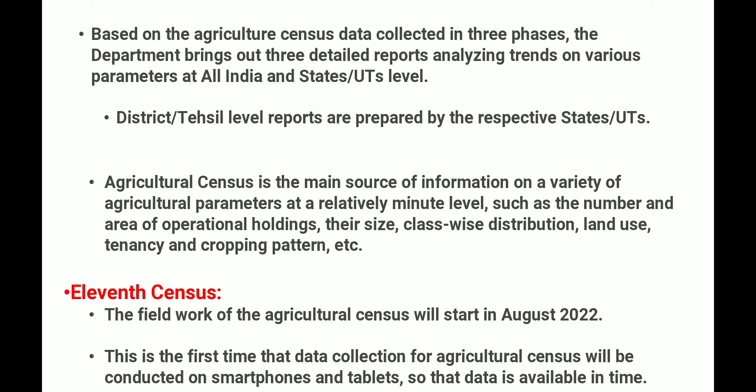यह जो department है वो bring करेगा detail reports analyzing trends on various parameters at all India and state/UT level। District and tehsil level reports are prepared by the respective states and UTs। Agriculture Census जो है वो main source of information है on a variety of agriculture parameters at a relatively minute level, such as the number and area of operational holdings, their size class wise distribution, land use, tenancy, and cropping pattern।